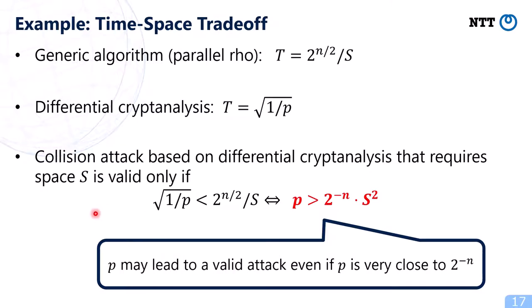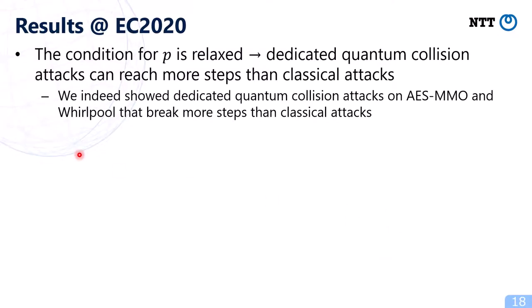Similarly, in the second quantum setting of time-space trade-off, the generic complexity leads to the condition that a collision attack based on differential cryptanalysis requiring space s is valid only if the time complexity — the square root of 1 over p — is less than the generic complexity. This means the differential probability p may lead to a valid attack even if p is very close to 2 to the power minus n, if the space s required for differential cryptanalysis is very small. So at Eurocrypt 2020, we observed that the condition for differential probability p can be relaxed in the quantum setting.